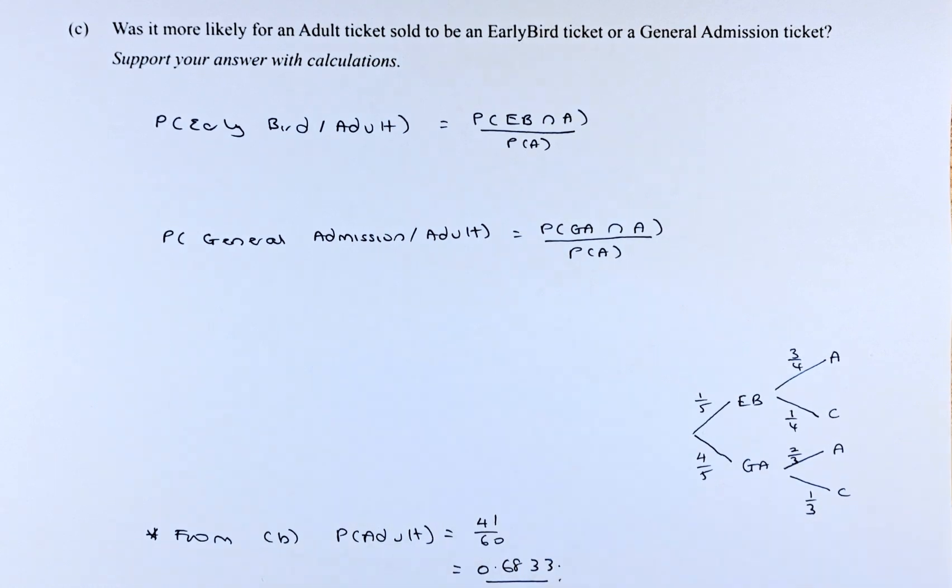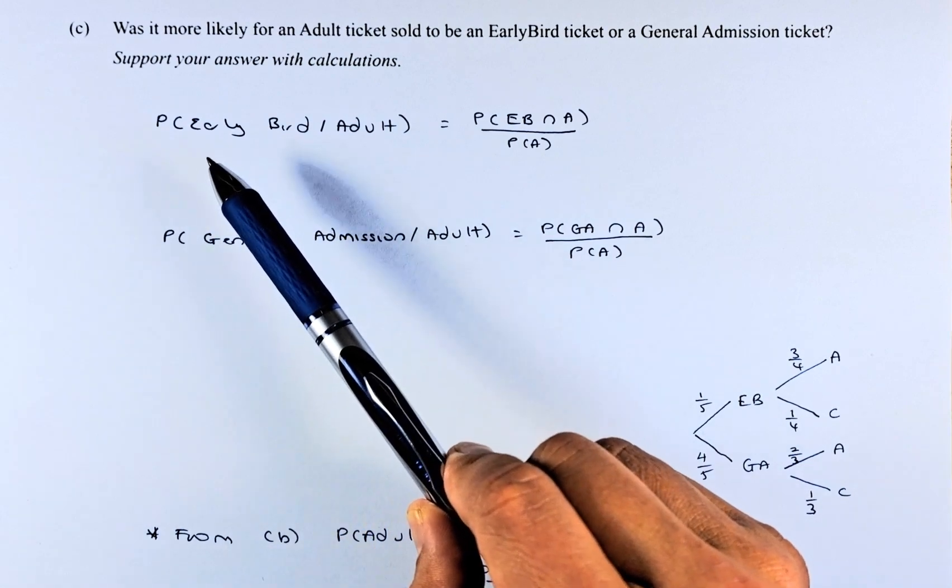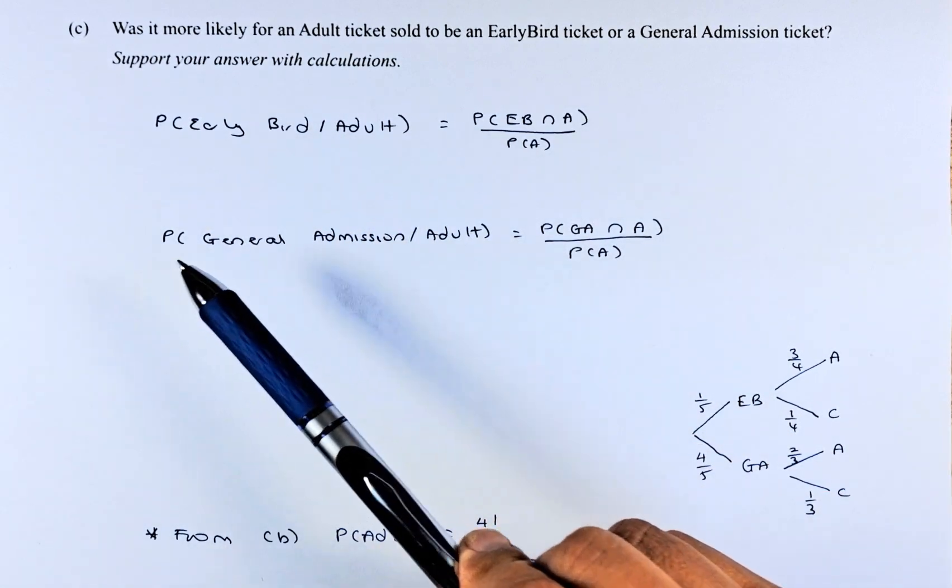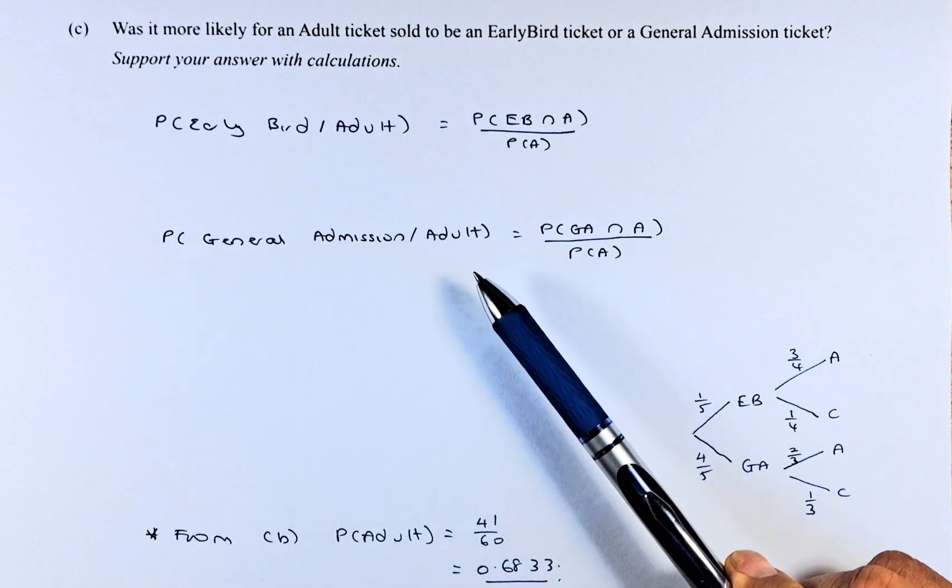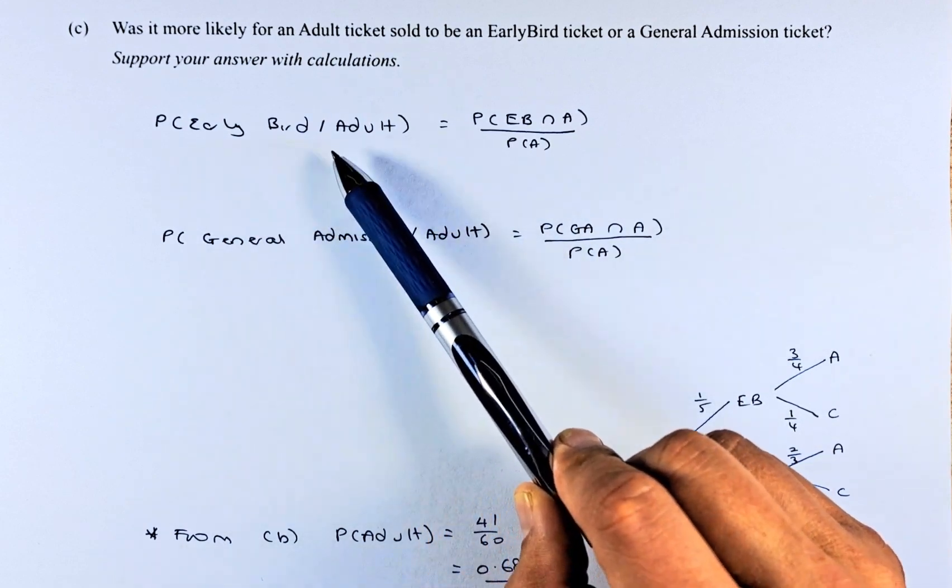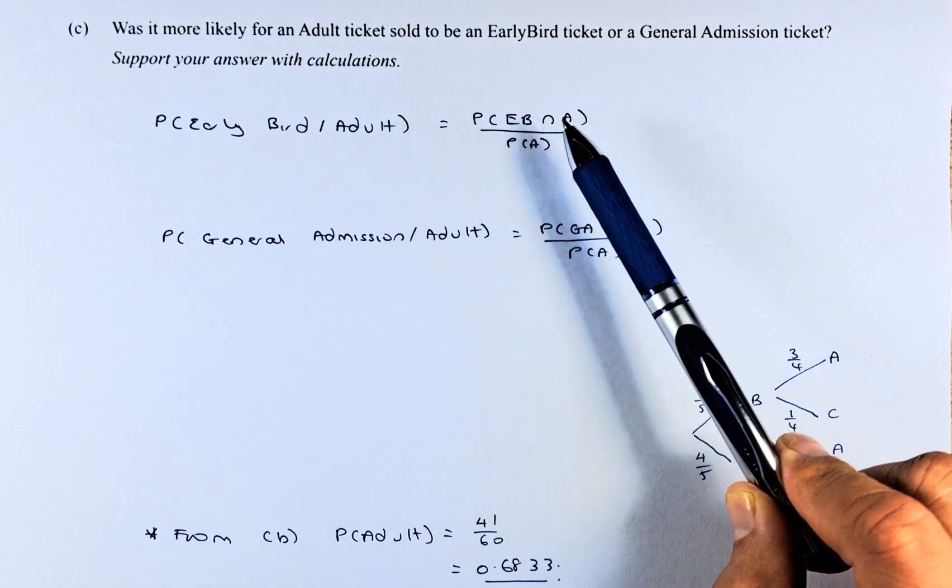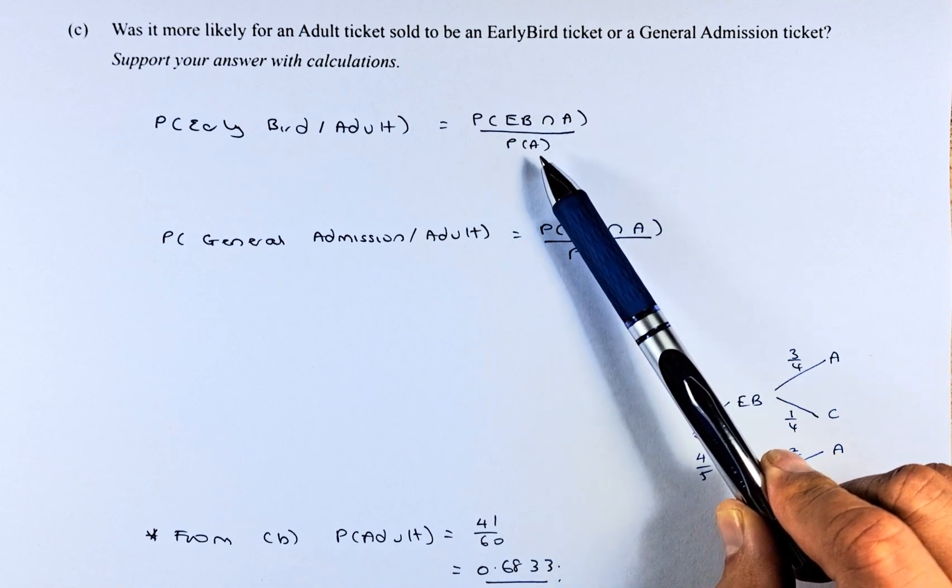There are two conditional probabilities to calculate. First, the probability of early bird given adult, and second, the probability of general admission given adult. The probability of early bird given adult equals the probability of early bird and adult divided by the probability of adult.